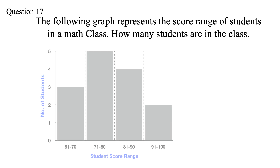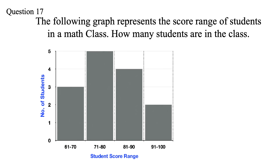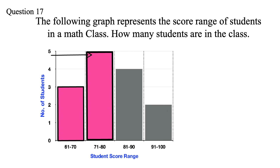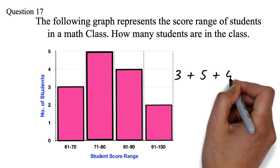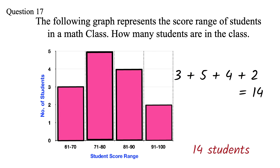Question 17: The following graph represents the score range of students in a math class. How many students are in the class? The x-axis represents the score range and the y-axis represents the number of students. From the graph: 3 students scored 61–70, 5 students scored 71–80, 4 students scored 81–90, and 2 students scored 91–100. Adding these: 3 plus 5 plus 4 plus 2 equals 14. Therefore there are 14 students in the class.